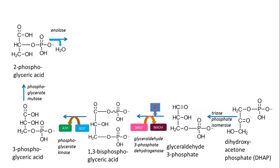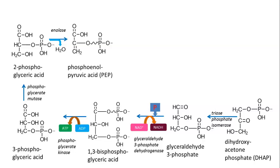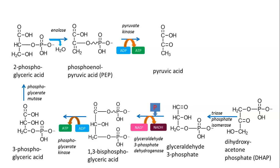From 2-phosphoglyceric acid, an enzyme called enolase removes water and we get a molecule called phosphoenolpyruvic acid, or PEP. This is important because PEP is used in some other forms of carbon metabolism. The enzyme pyruvate kinase then takes ADP and phosphorylates it, removing the phosphorus off the phosphoenolpyruvic acid. This gives us pyruvic acid, which is the end product of glycolysis.